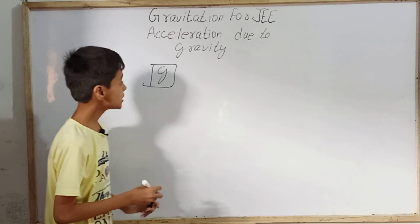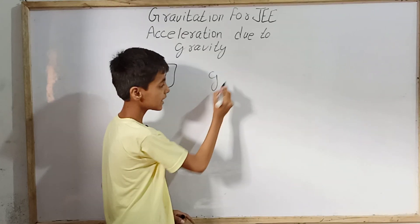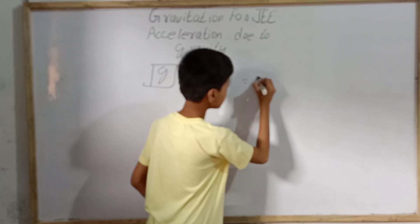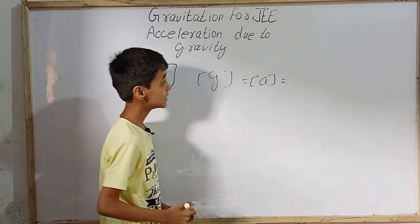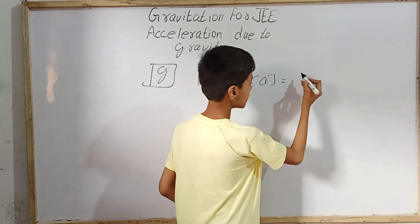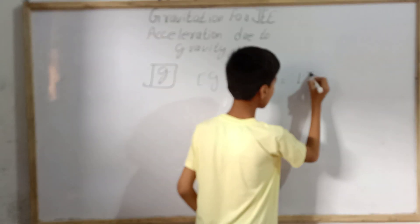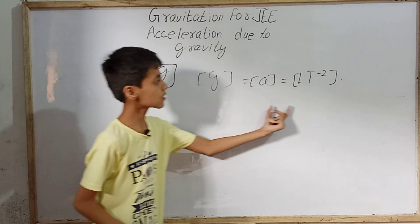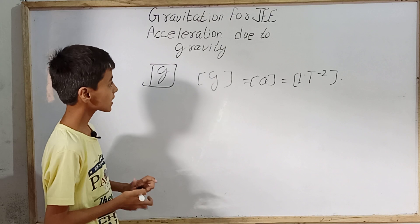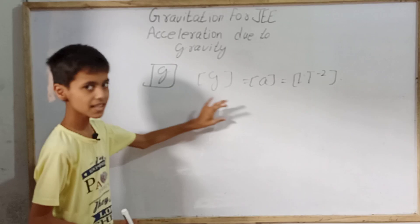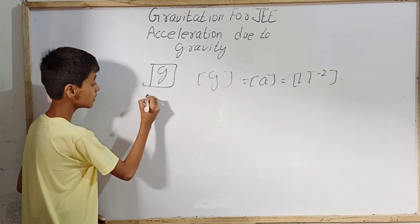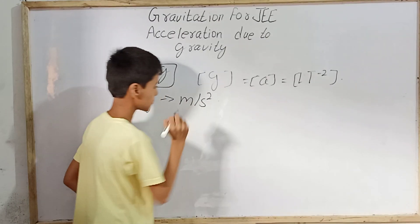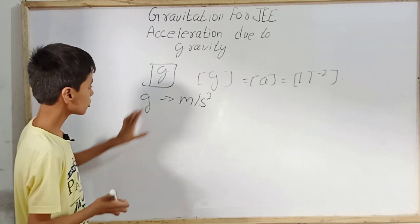Acceleration due to gravity is denoted by g. The dimensions of g are the same as that of acceleration a, which we write as LT⁻². So the dimensions of g are also LT⁻². The unit for g is also the same as acceleration — that is meters per second squared. This is a very important point.